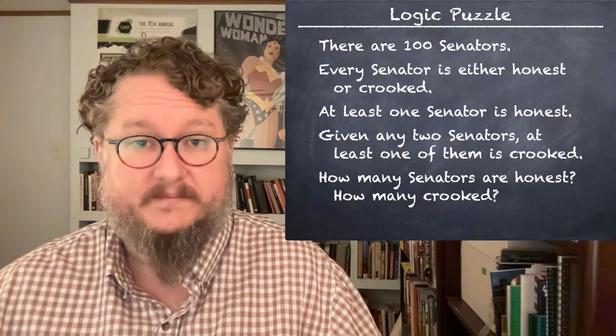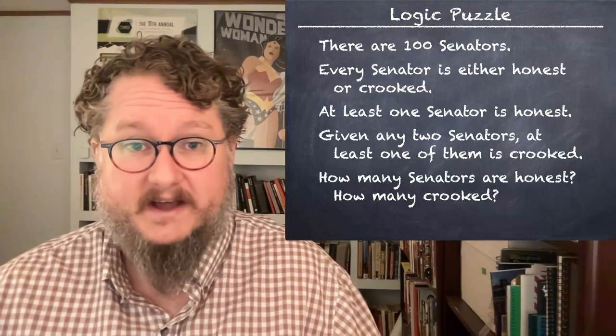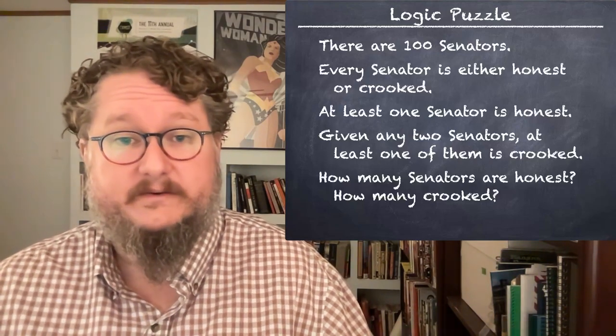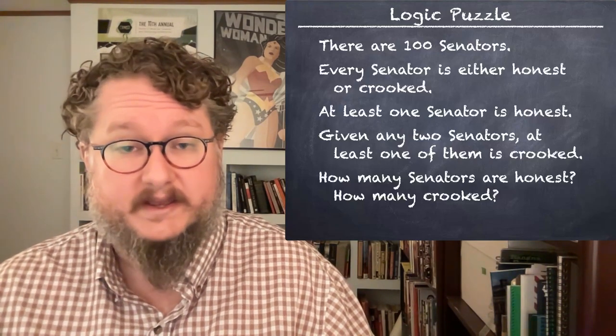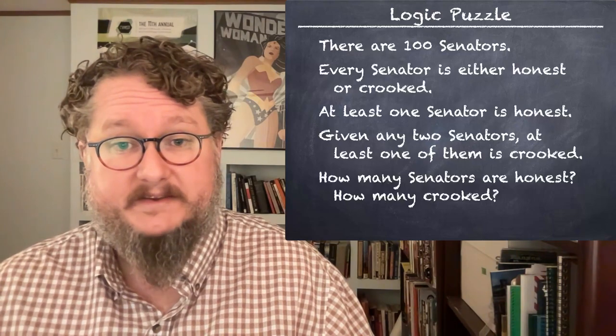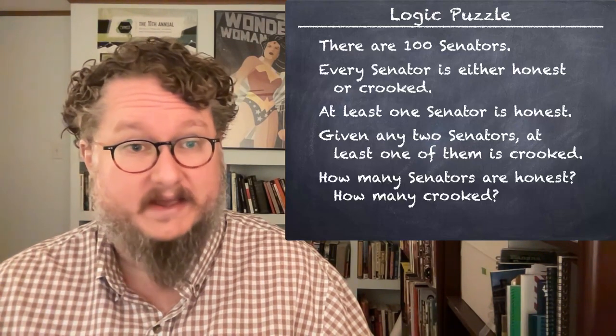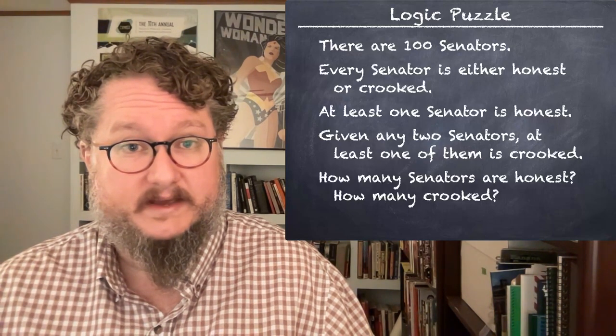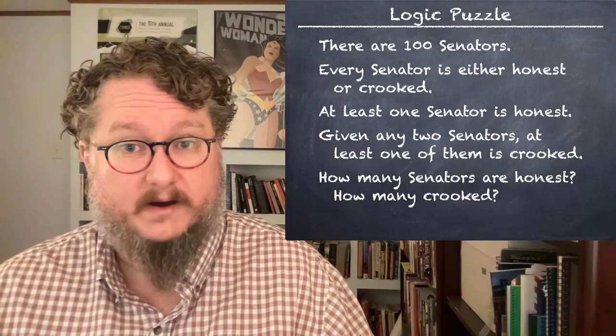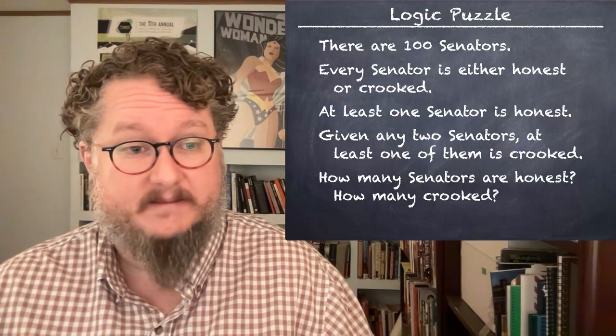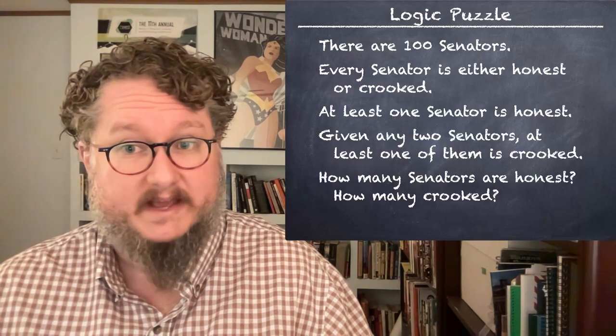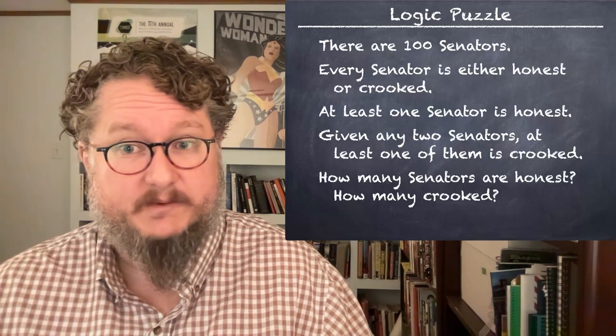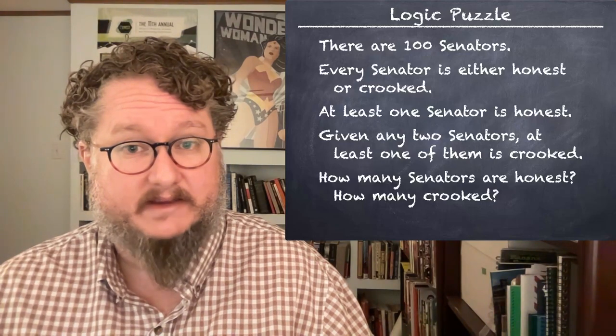I like to start class off often with a little logic puzzle to get us thinking. So let's look at this one. There are a hundred senators. Every senator is either honest or crooked. At least one senator is honest and given any two senators at least one of them is crooked. How many senators are honest and how many are crooked? You can write down your answer now. We'll come back to the puzzle at the end of the lecture.